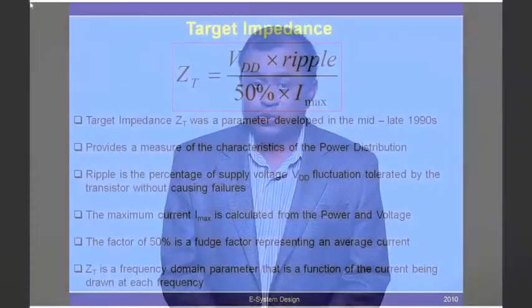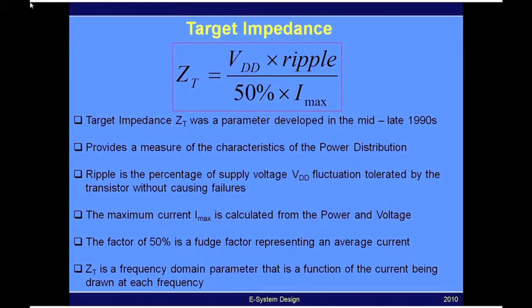What makes it difficult to use is that Zs of T is a frequency-dependent parameter. In other words, the current being drawn by the IC can change as a function of frequency. Unless you have that information, you end up with a constant value for target impedance if you assume a constant value for the current. Either way, you can use the target impedance based on the information you have to design your power distribution network. This one parameter has completely changed our methodology for designing power distribution networks for the last 10 years.